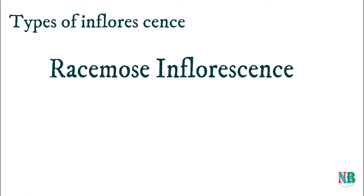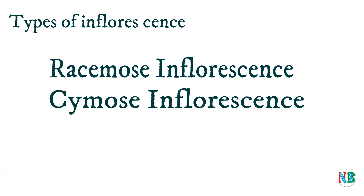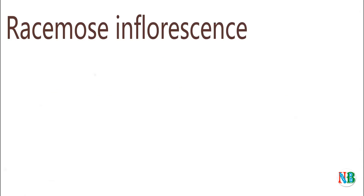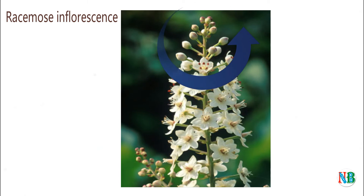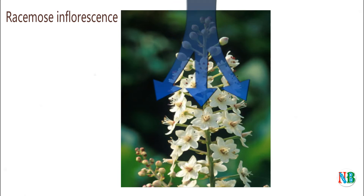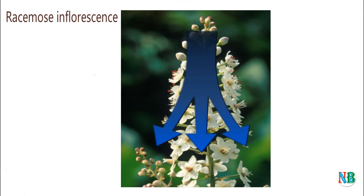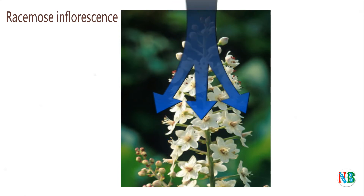One is racimose inflorescence and the other is cymose inflorescence. In racimose inflorescence, flowers are arranged acropetally — that means younger flowers will be at the top. This occurs because the main axis keeps on growing, so older flowers come to the bottom and new flowers appear at the top.